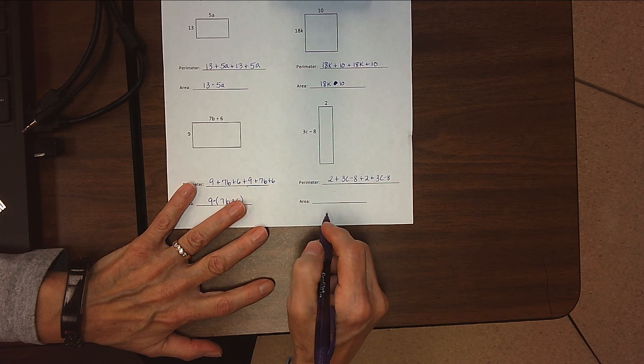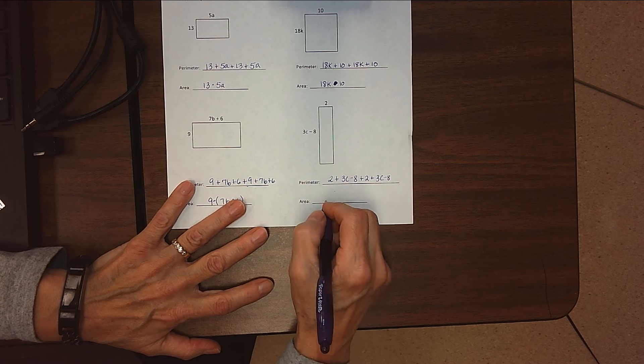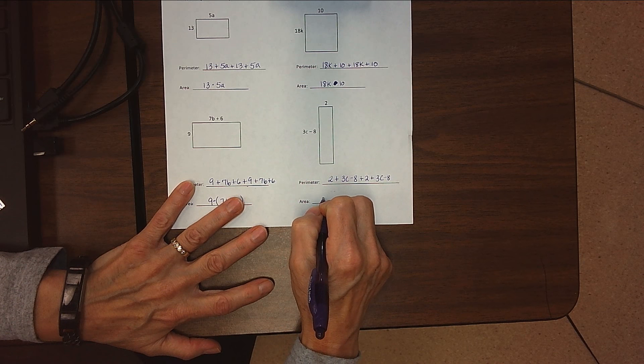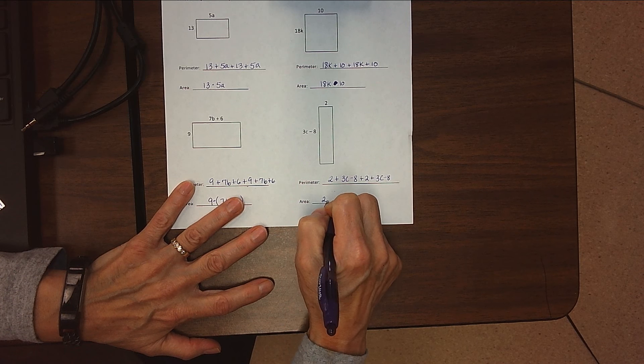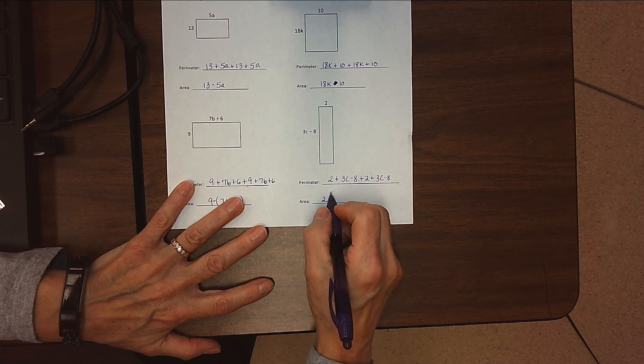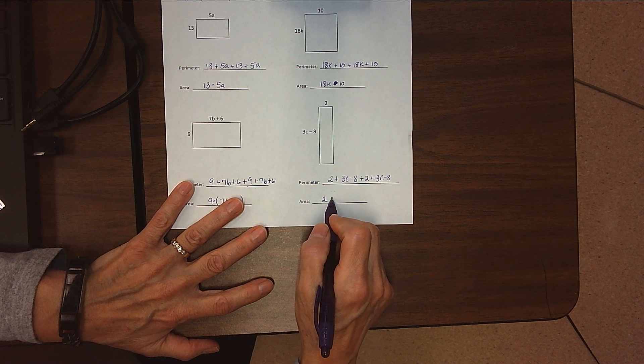We don't want to multiply 2 times 3c and then subtract 8. We want to take 3c, subtract 8, and then multiply it by 2.